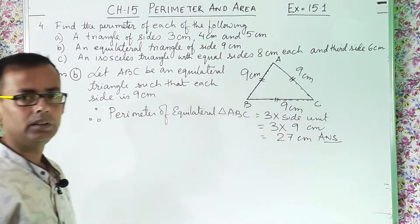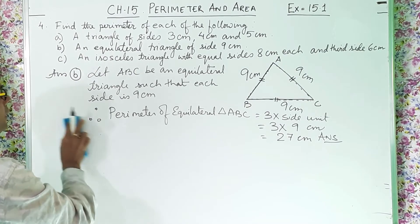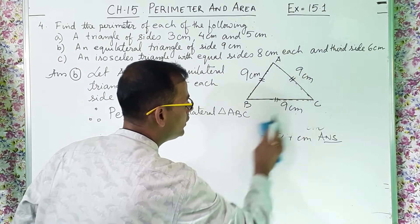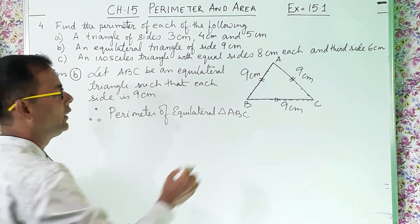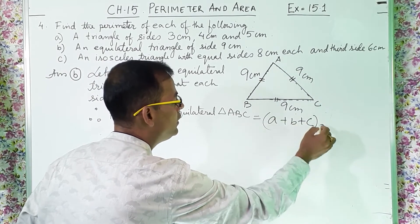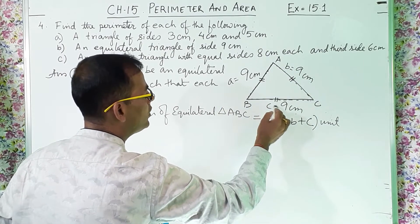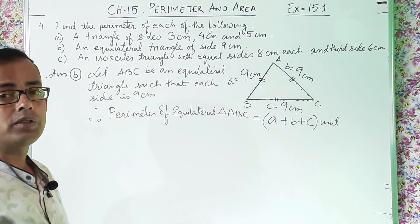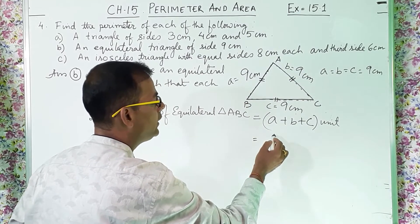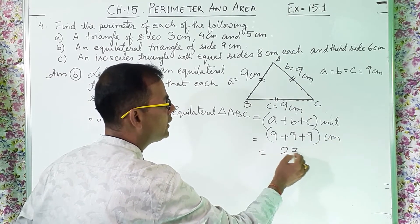Here is an alternative method. Perimeter of equilateral triangle = a + b + c. Since all sides are equal — a = b = c = 9 cm — we write 9 + 9 + 9 = 27 centimeters. So you can solve this sum either way. Both methods give the same answer of 27 centimeters.